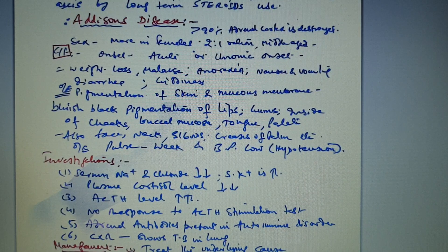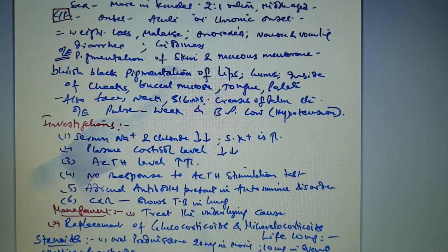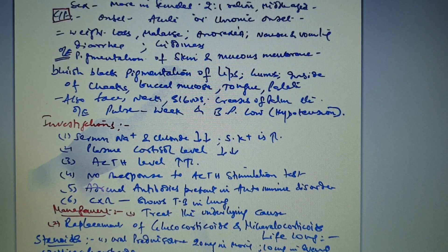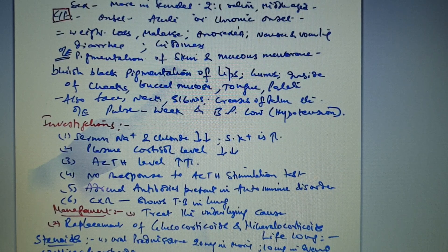Investigations in Addison's disease: plasma cortisol levels are low; serum sodium and chloride are low; serum potassium is increased. ACTH levels are very high. Adrenal antibodies are present in autoimmune disorders. Chest X-ray may show tuberculosis in the lungs, and CT abdomen may show calcification in the adrenal glands.